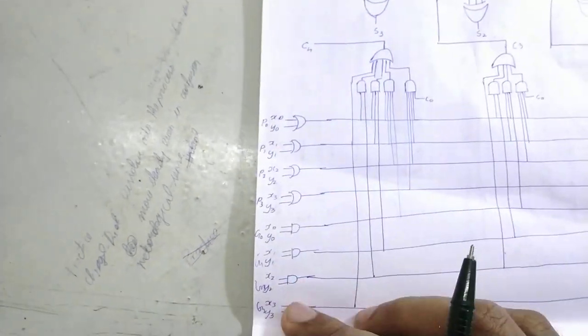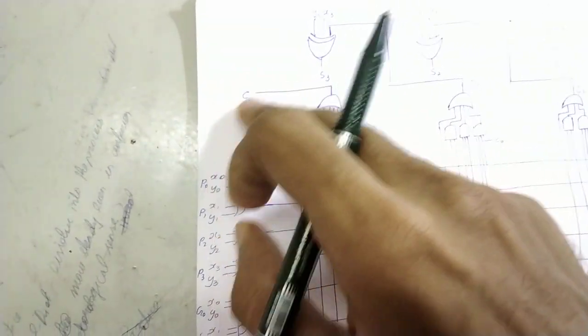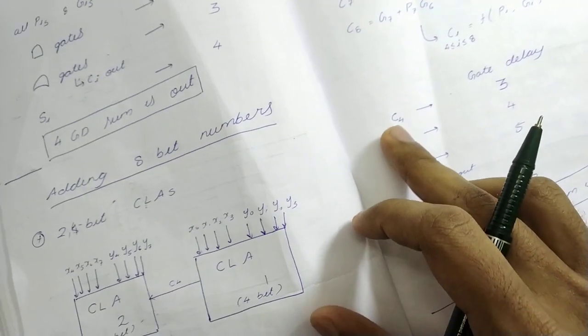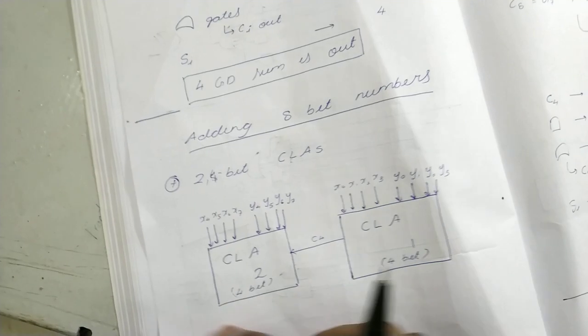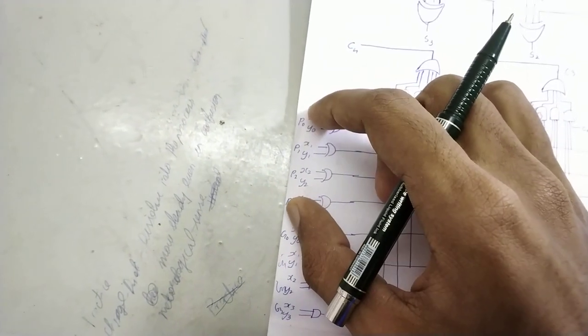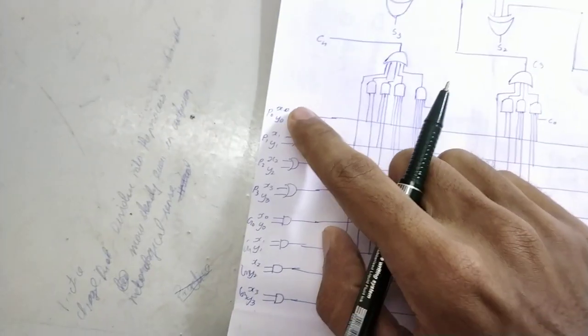That means one for this, one for all these AND gates, one for the OR gate and C4 will come out then. So C4 comes out at 3rd gate delay. In the 4th gate delay, what happens is, in the 3rd gate delay itself, this C4 is available for the 2nd CLA. So 2nd CLA is also something just the same as this. But this thing, the P0s will only change. This P0 will be P4, P5, P6, P7.